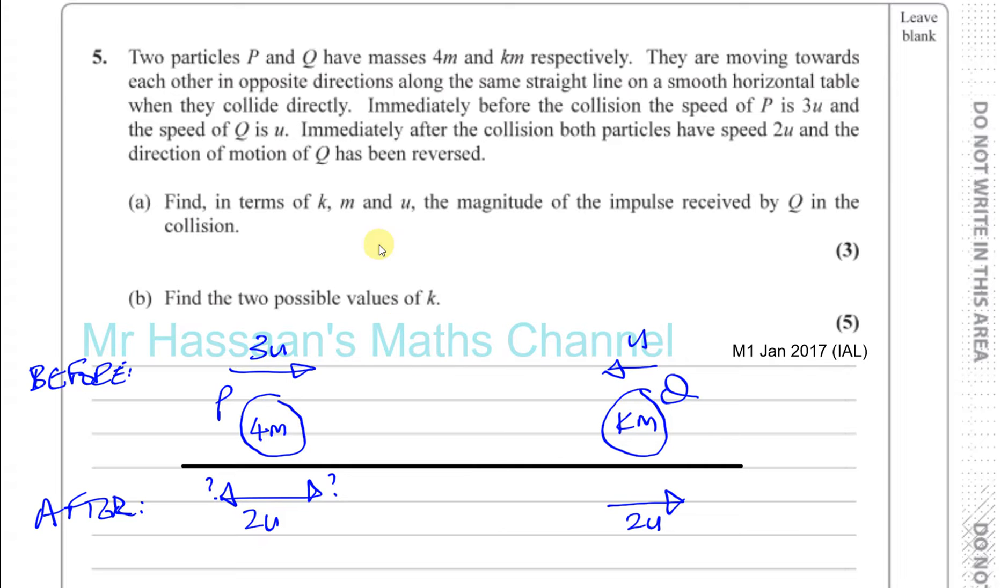Part A says find in terms of KM and U the magnitude of the impulse received by Q. Now if Q has either slowed down or changed its direction, when P hits it, the impulse acts in this direction, causing it to change its direction or slow down. So the impulse that acted on Q must have acted in this direction. Let's take the right as positive.